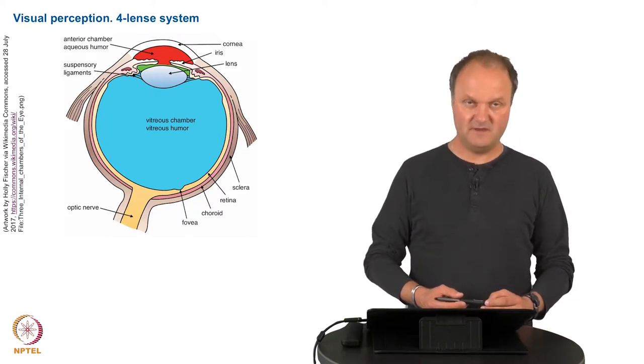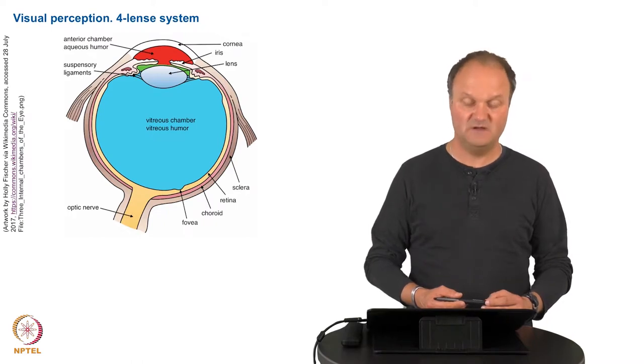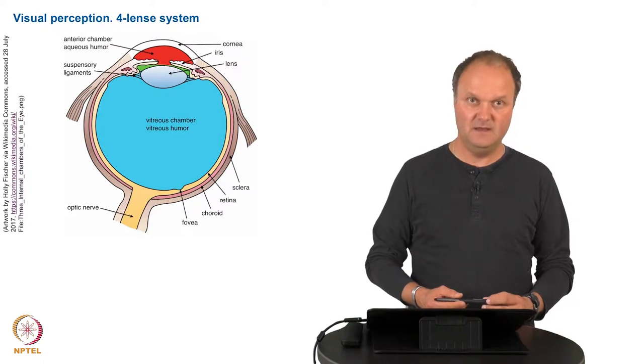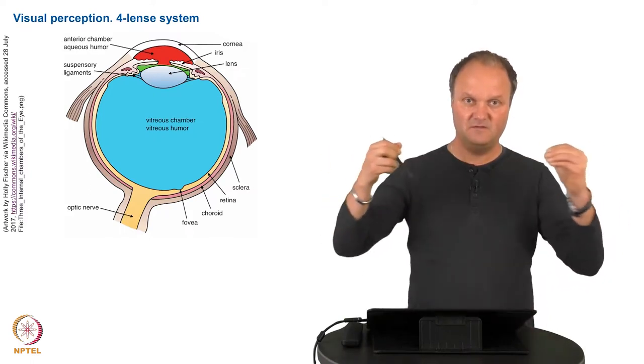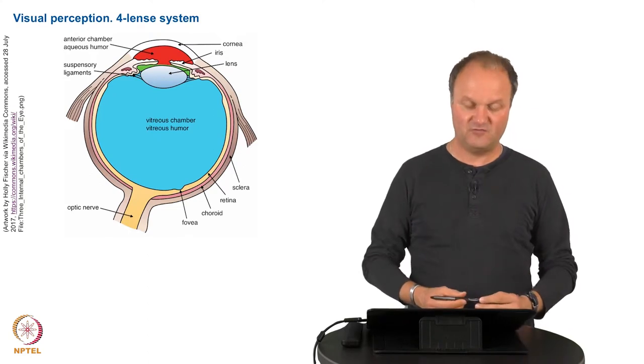The refractive power of the entire system is approximately 60 diopters where 43 diopters approximately come from the transition between the air and the cornea and approximately 20 from the lens. The refractive power of the lens can actually be changed by tearing the lens to the outer side making it flatter and making it less refractive.